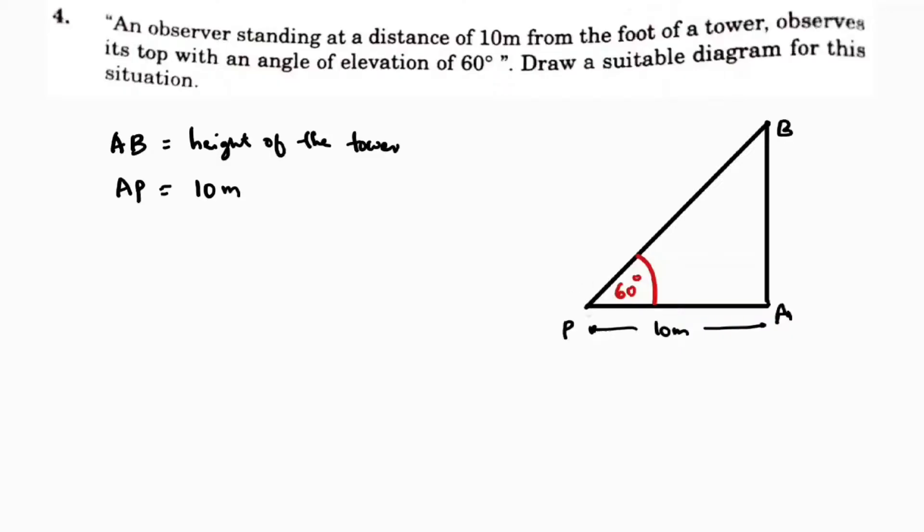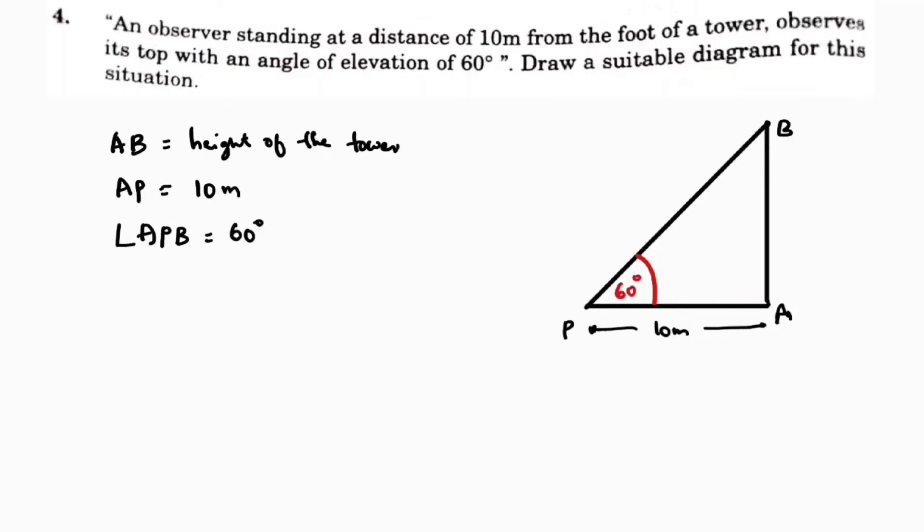Angle of elevation means from here a person is seeing from this point to the top of the tower. So angle BAP, or APB, is 60 degrees.